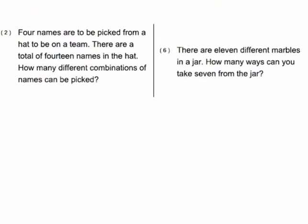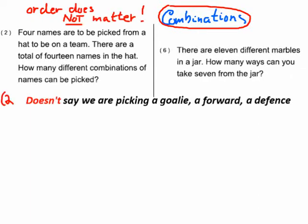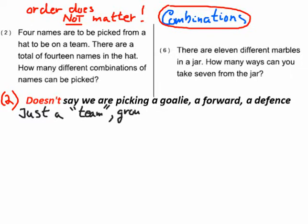Now let's do combinations. Combinations: order does not matter. Combinations are probably more common for daily use than permutations. For example, four names are randomly picked from a hat to be on a team. There are 14 names in the hat — how many different combinations are possible? A combination is an unordered arrangement of different objects.